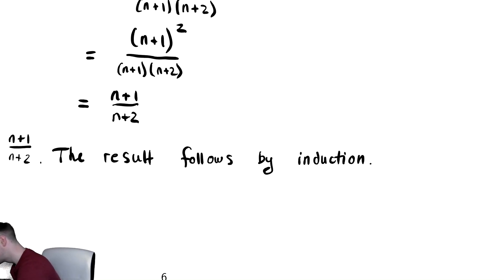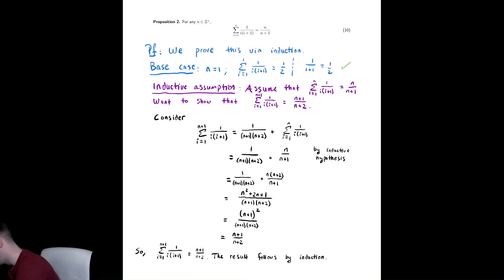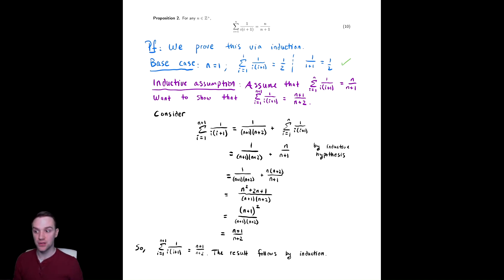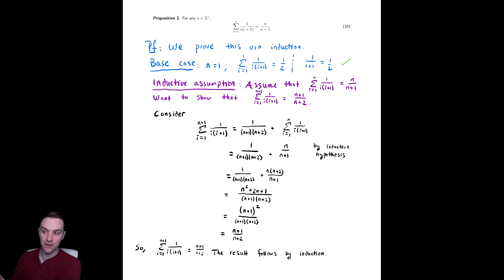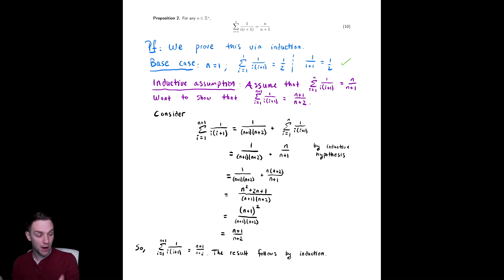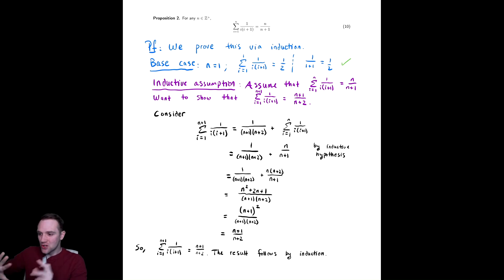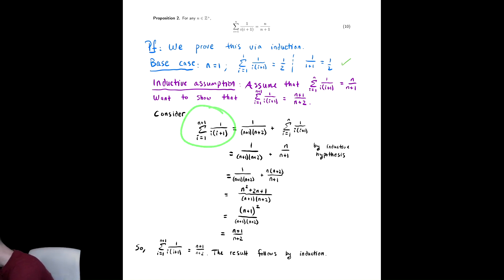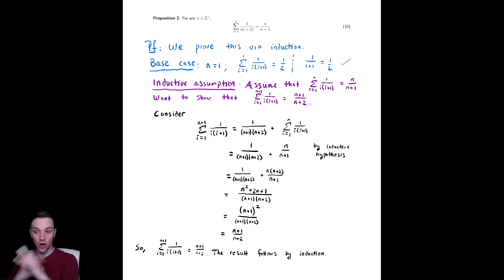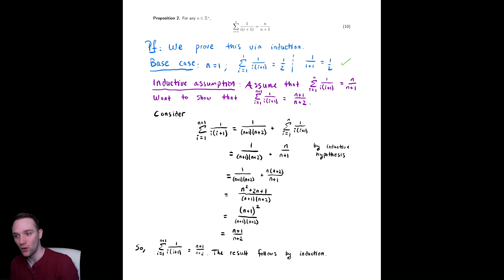Induction is in some sense tailor-made for this type of problem. Induction works very naturally for things that are defined recursively, and summations by definition are defined recursively. Therefore, it is usually very good to use induction for any problem like this, even if you were not told to do so. The only major difference between any of these proofs is the algebra and manipulations you need to do. In general, starting with the desired summation, peeling off the first term, and then using the inductive hypothesis is always going to be a good start. You then need to do a bunch of algebra to show that it actually holds.